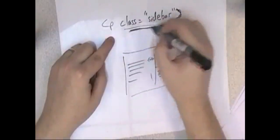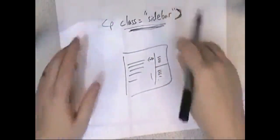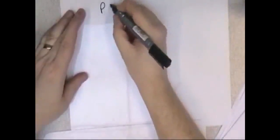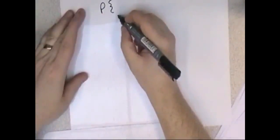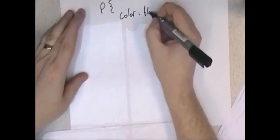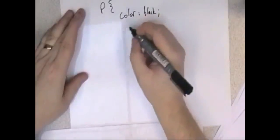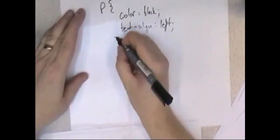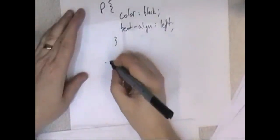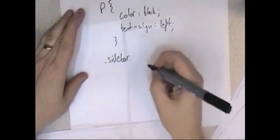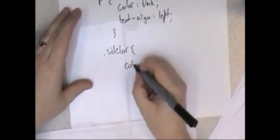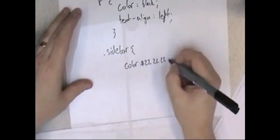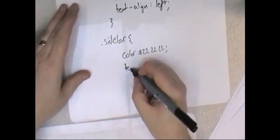Anything in a class supersedes what you've said about the general paragraph. In the CSS file, a normal paragraph might have a text color of black and be aligned to the left. But the sidebar class — defined with a dot, which means it's a class — is going to be a slightly lighter color, like #222222, and aligned to the right.